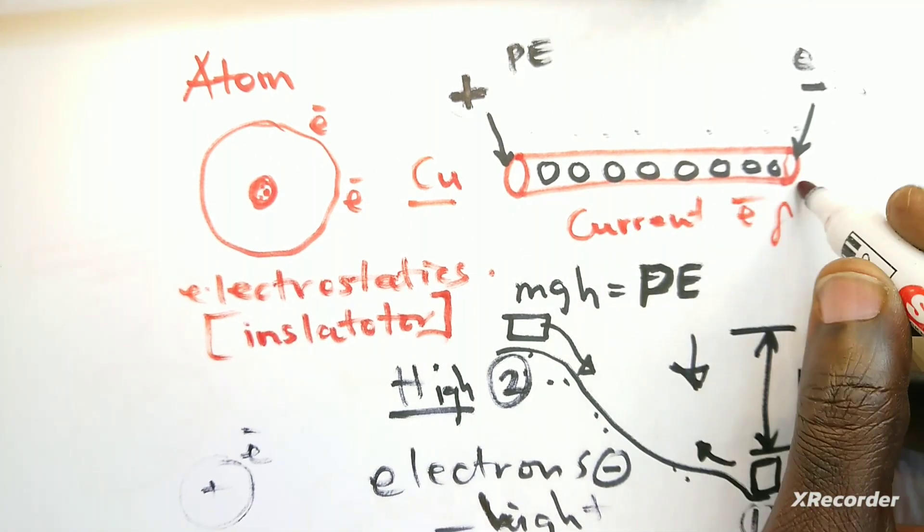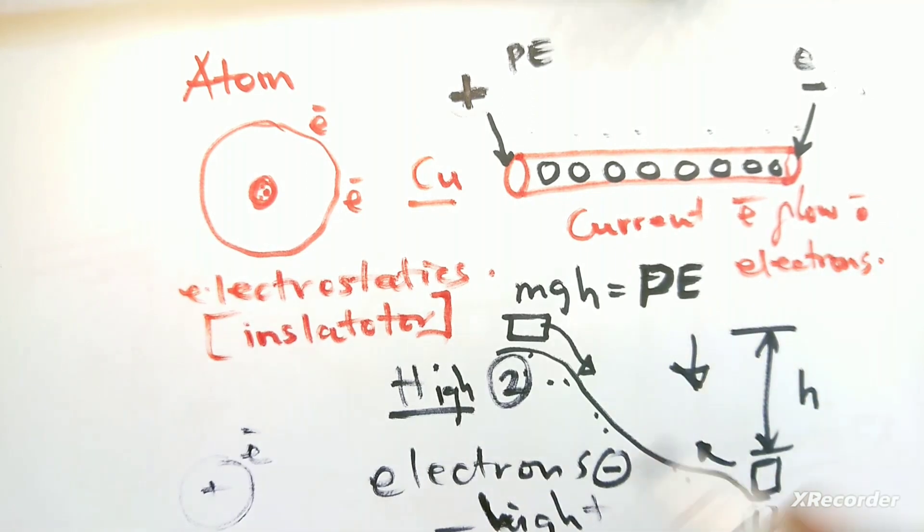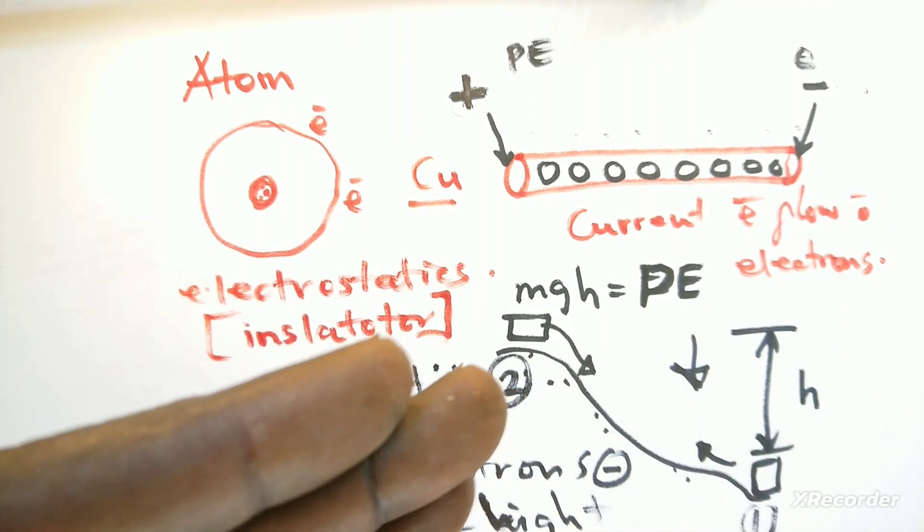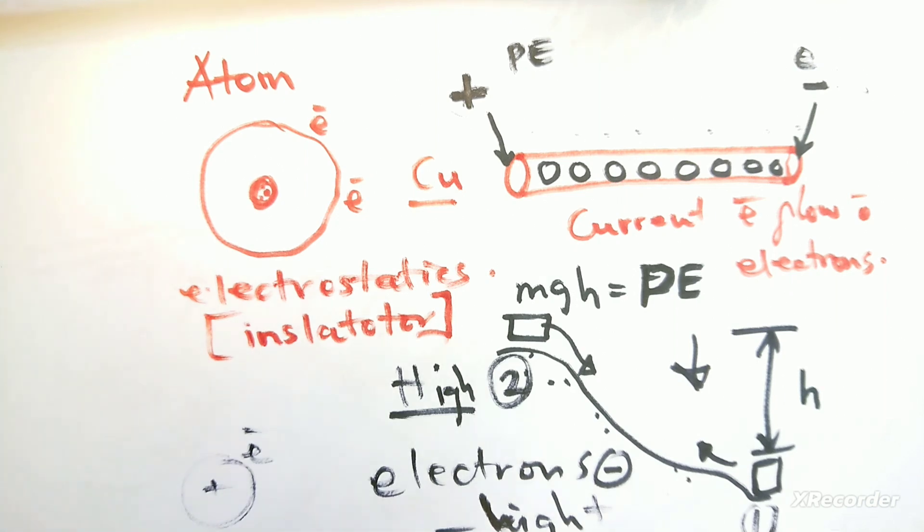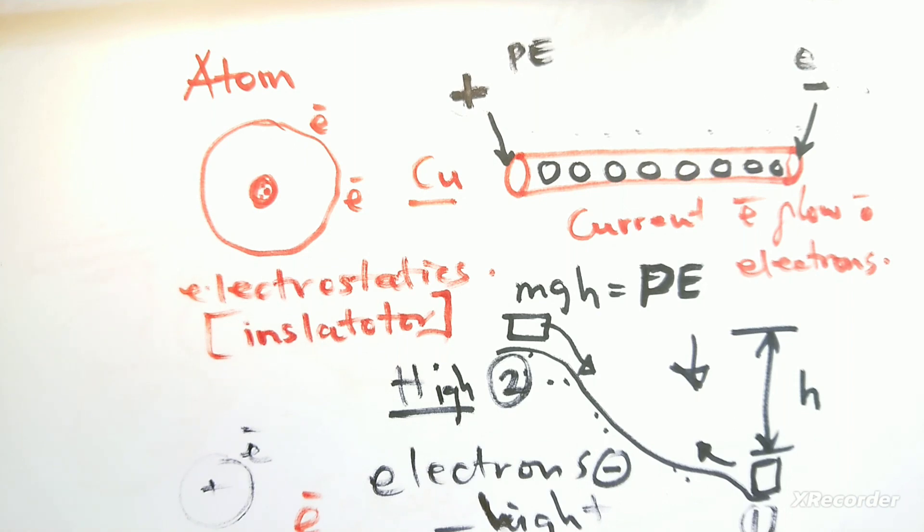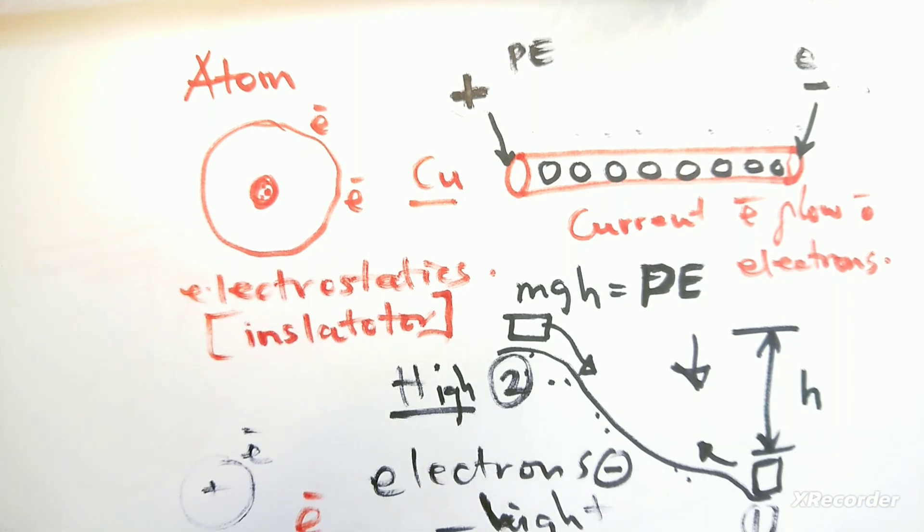But by convention, we tend to indicate the flow of current by the positive charge—the direction in which the positive charge would move. So if you know the direction in which the electrons are actually flowing, the opposite is where the current will be indicated to be flowing.